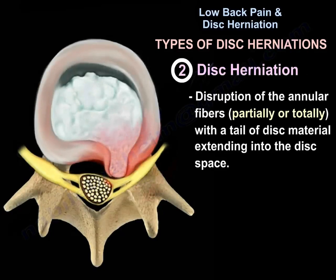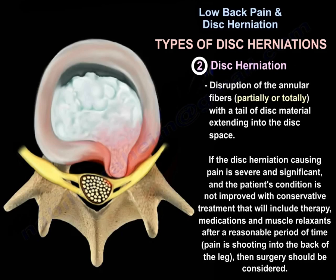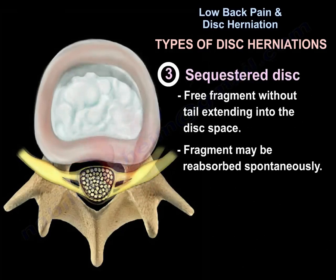The second type is disc herniation. In this type there is disruption of the annular fibers, partially or totally, with a tail of disc material extending into the disc space. If the disc herniation causing pain is severe and the patient's condition is not improved with conservative treatment — including therapy, medications, and muscle relaxants — after a reasonable period of time, and the pain is shooting into the back of the leg, then surgery should be considered.